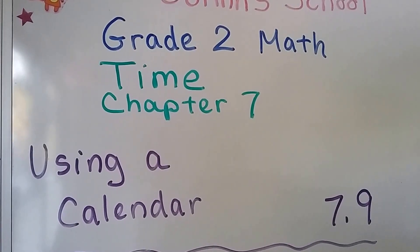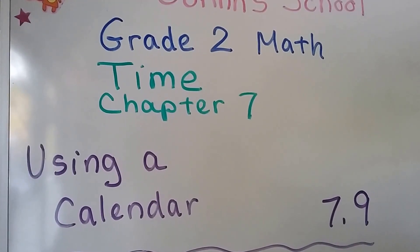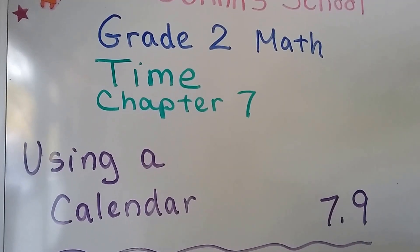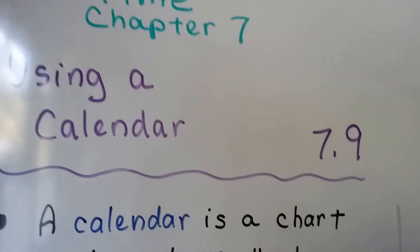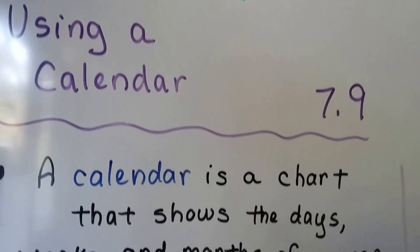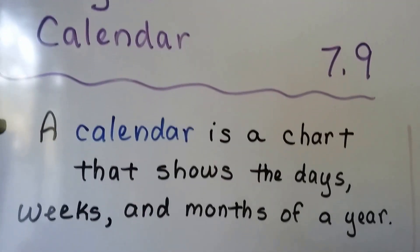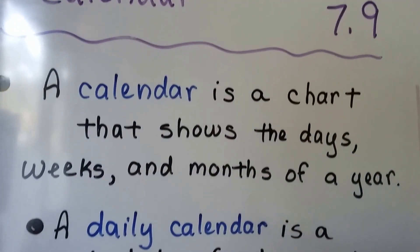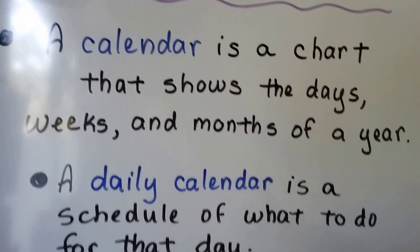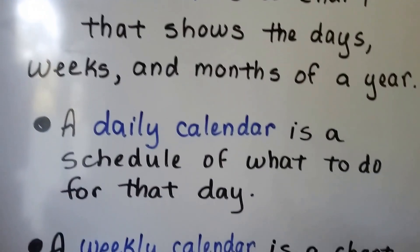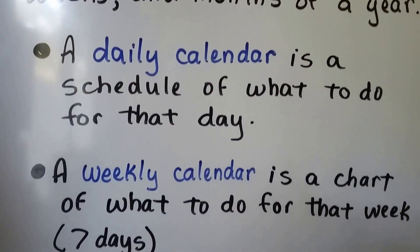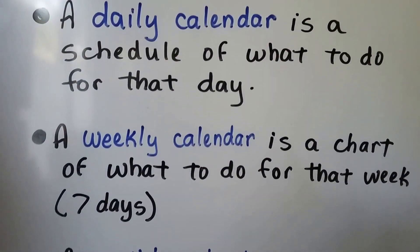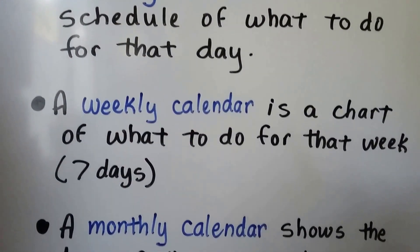We're going to learn about how to use a calendar in this lesson, 7.9. A calendar is a chart that shows the days, weeks, and months of a year. A daily calendar is a schedule of what to do for that day.